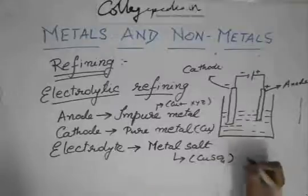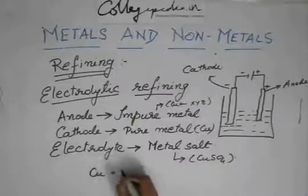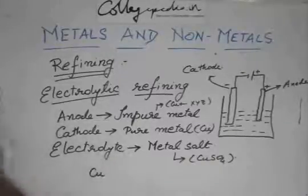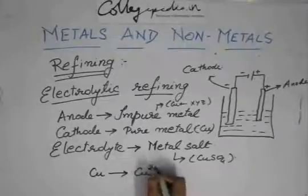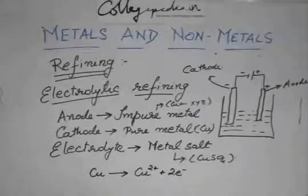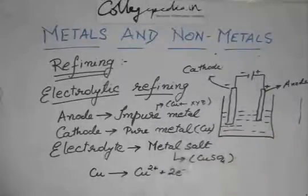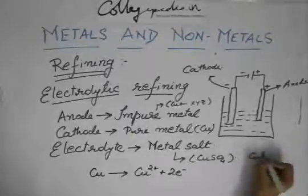Because the anode is positively charged, copper will lose its electrons to become Cu²⁺. This Cu²⁺ goes into the solution, which is already copper sulphate — in ionic form that is Cu²⁺ and SO₄²⁻.